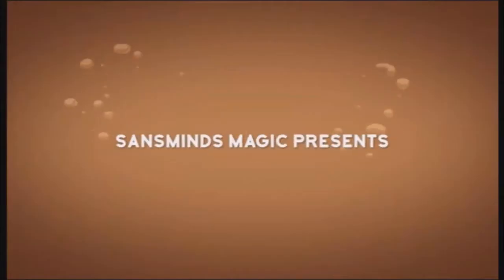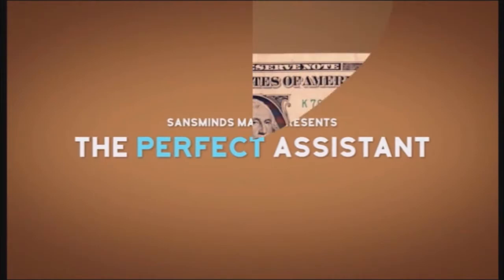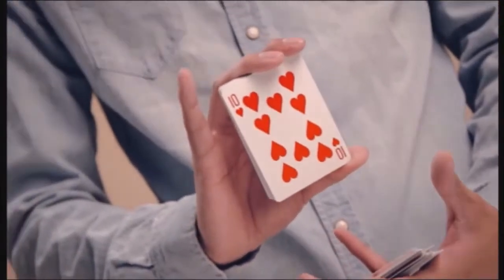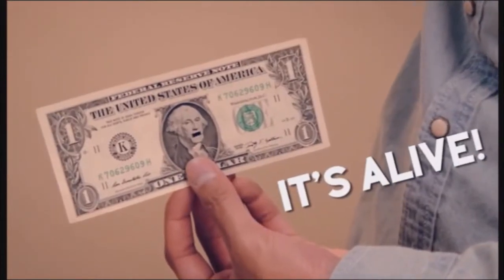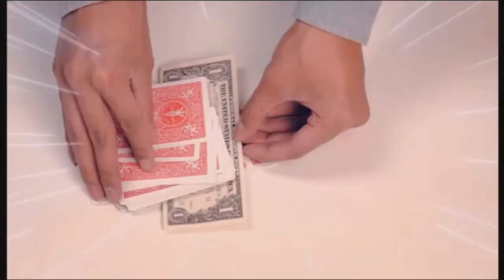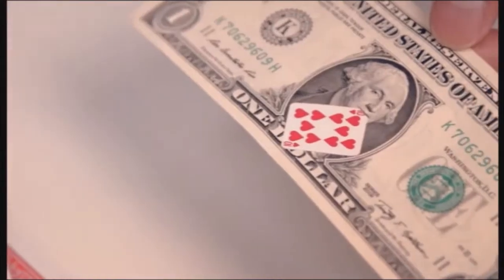Explaining that this person on the bill is your secret helper, you then insert the bill into the deck and withdraw it. When you withdraw the bill, the spectator's chosen card is stuck there between that person's teeth. Sounds pretty fun?